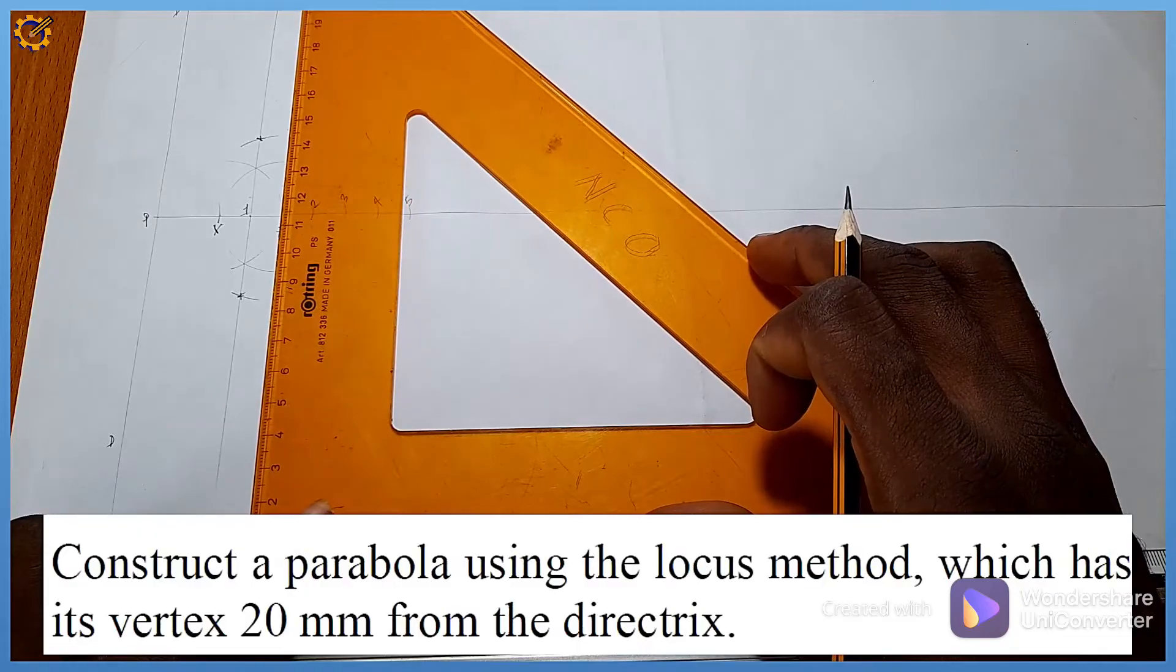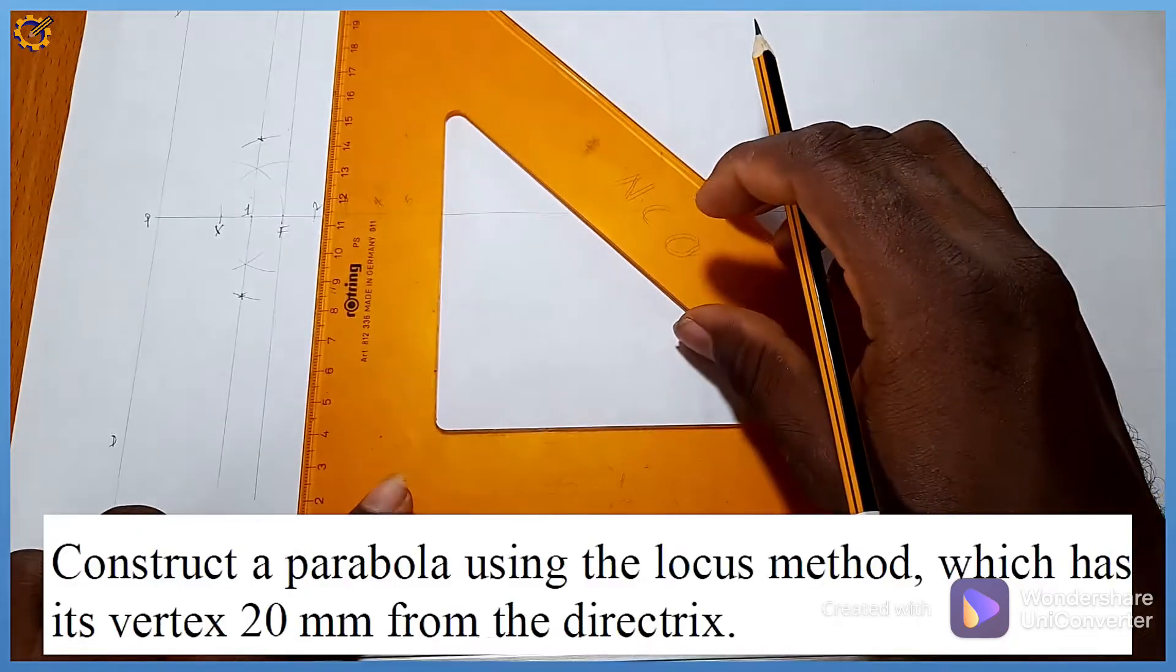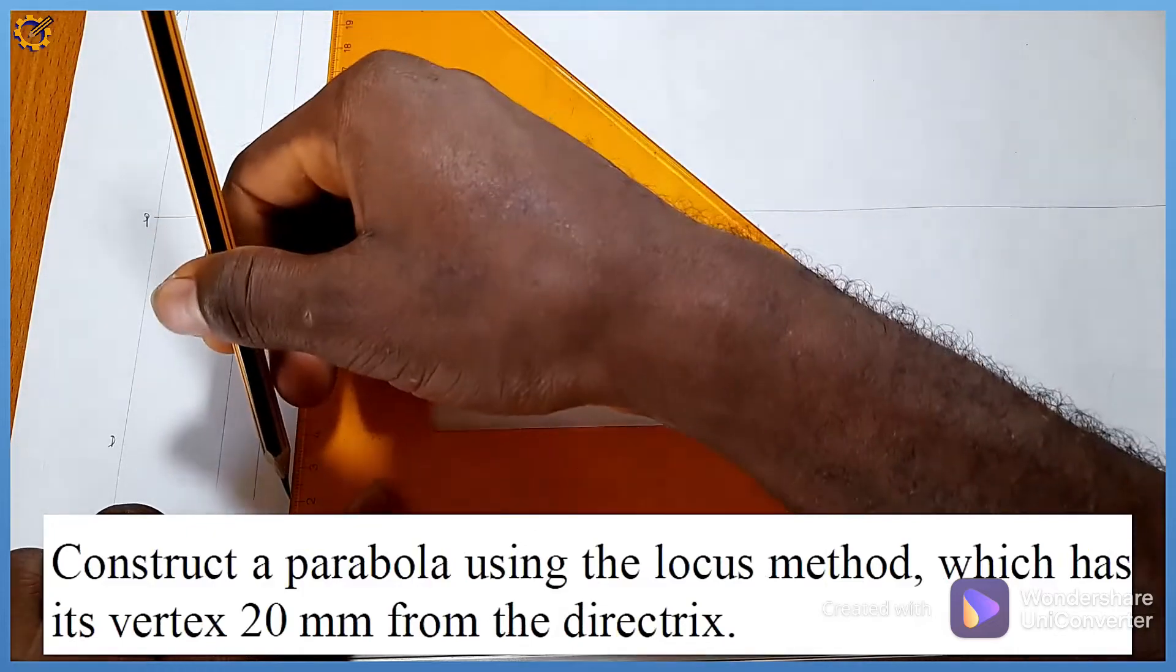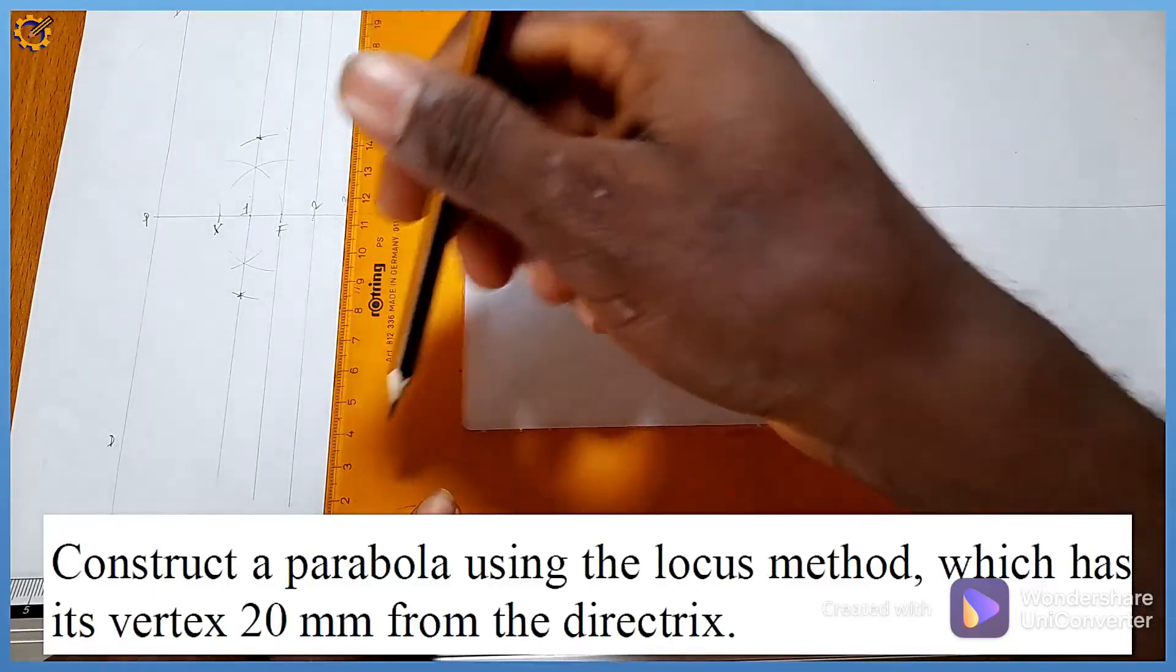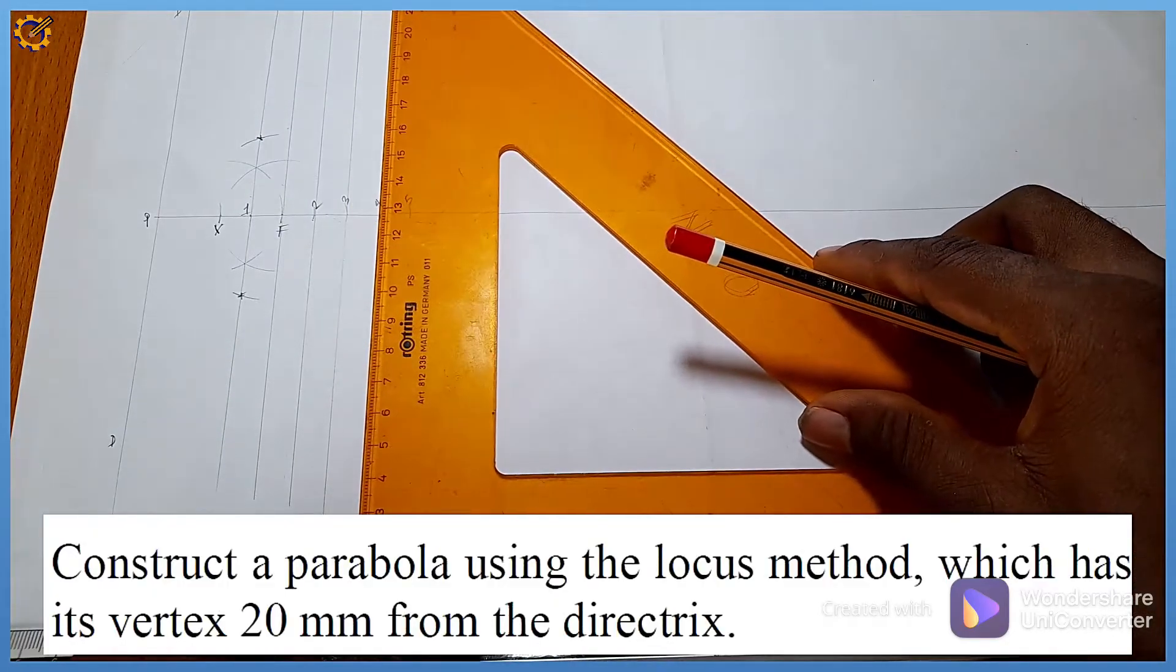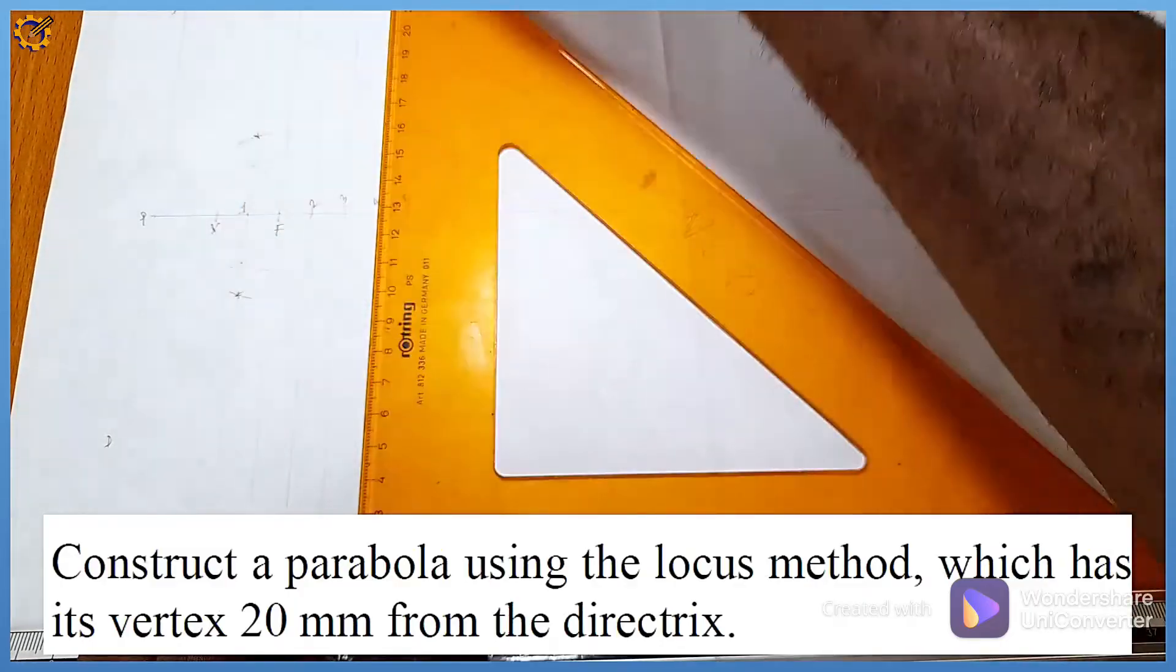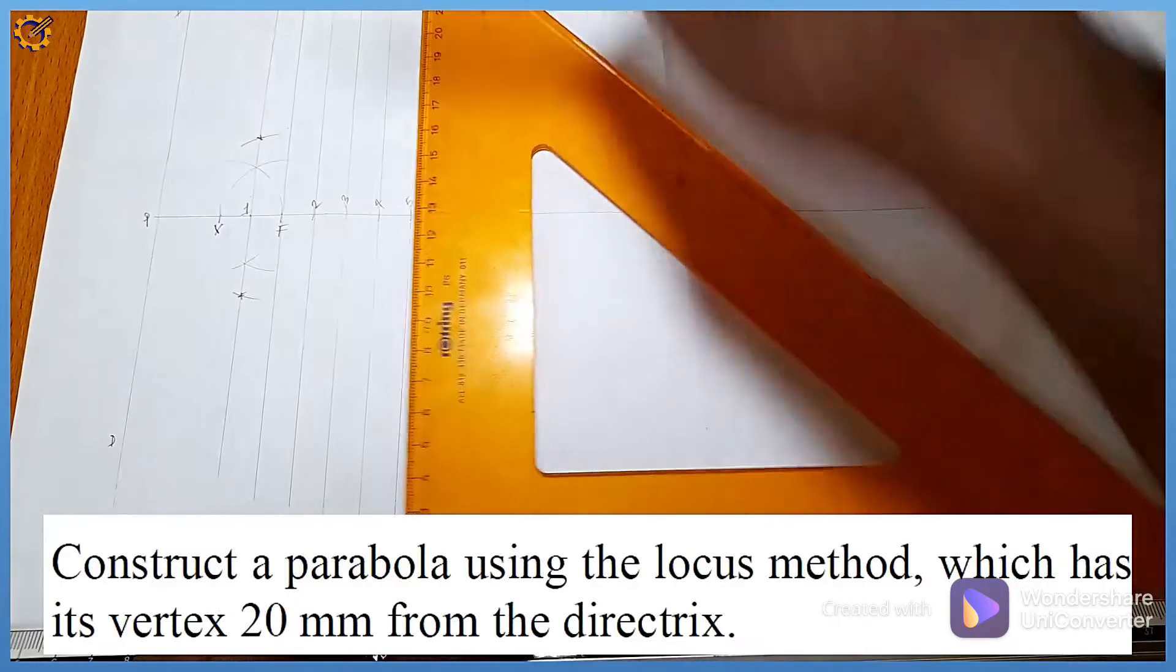On point F I'm going to produce a vertical line faintly. Likewise on point 2, a vertical line faintly. On point 3, a vertical line faintly. On point 4, a vertical line faintly. On point 5, a vertical line also faintly.